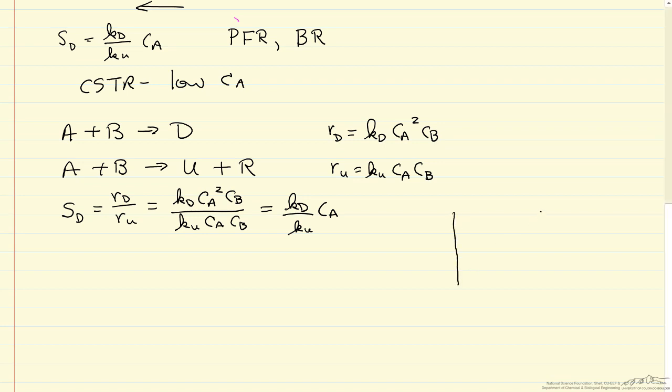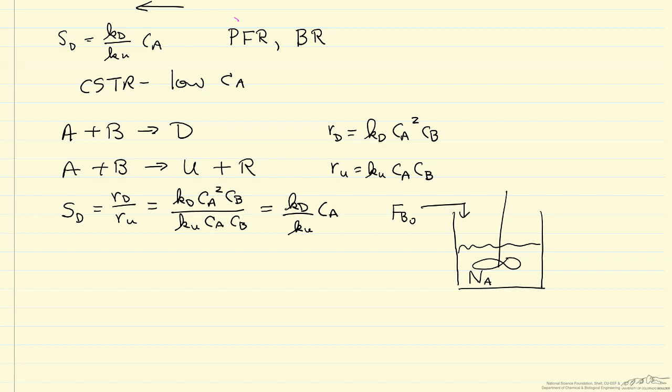If you want to use a semi-batch reactor, a semi-batch reactor we should run with A initially in the reactor and then continually add B as a means to create a high concentration of A.